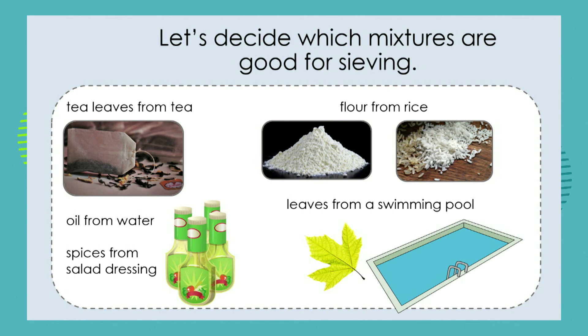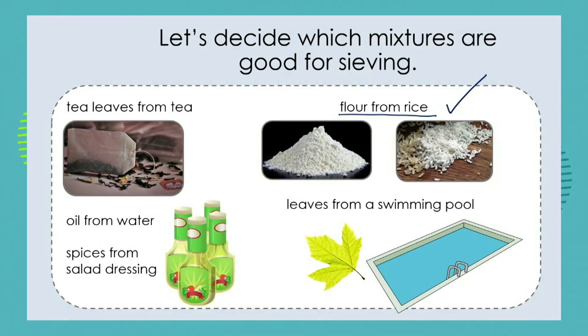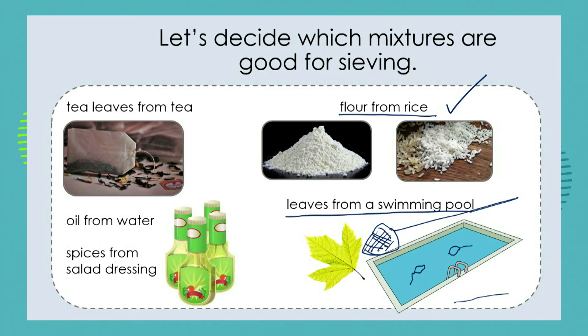Let's decide which mixtures are good for sieving. Could we separate a mixture of flour and rice using a kitchen sieve? Yes, sieving will work perfectly — the rice, the larger particles, will stay in the sieve, and the flour will move through to the bottom. Can we sieve leaves from a swimming pool? Yes, a pool scoop with a big net can scoop leaves off the surface — that works well for cleaning your pool. But we can't sieve tea leaves from tea, we can't sieve oil from water, and while we might sieve out spices from salad dressing, we can't separate oil from water — we need yet another method of separation.